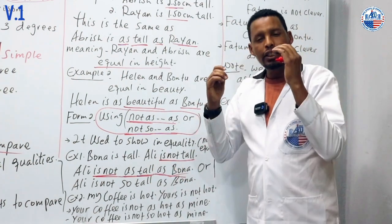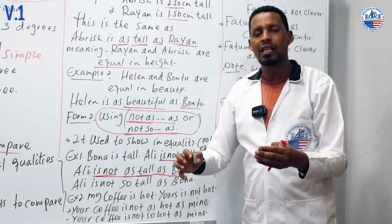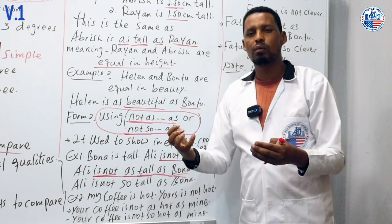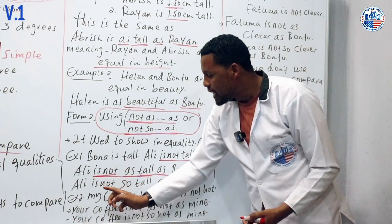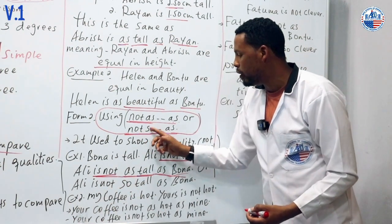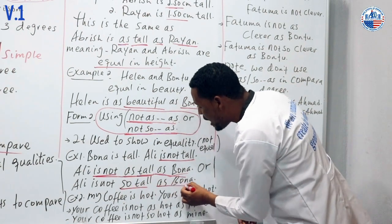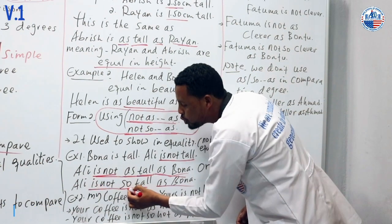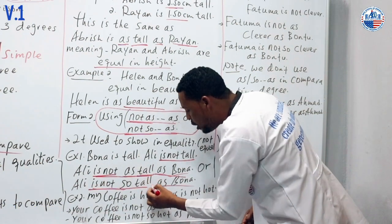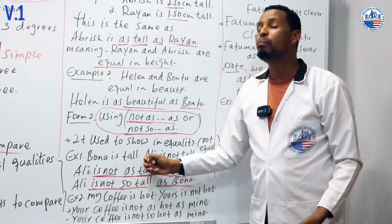We can also say: Ali is not so tall as Bona. Both 'not as...as' and 'not so...as' mean the same thing - they show inequality between the two people being compared.